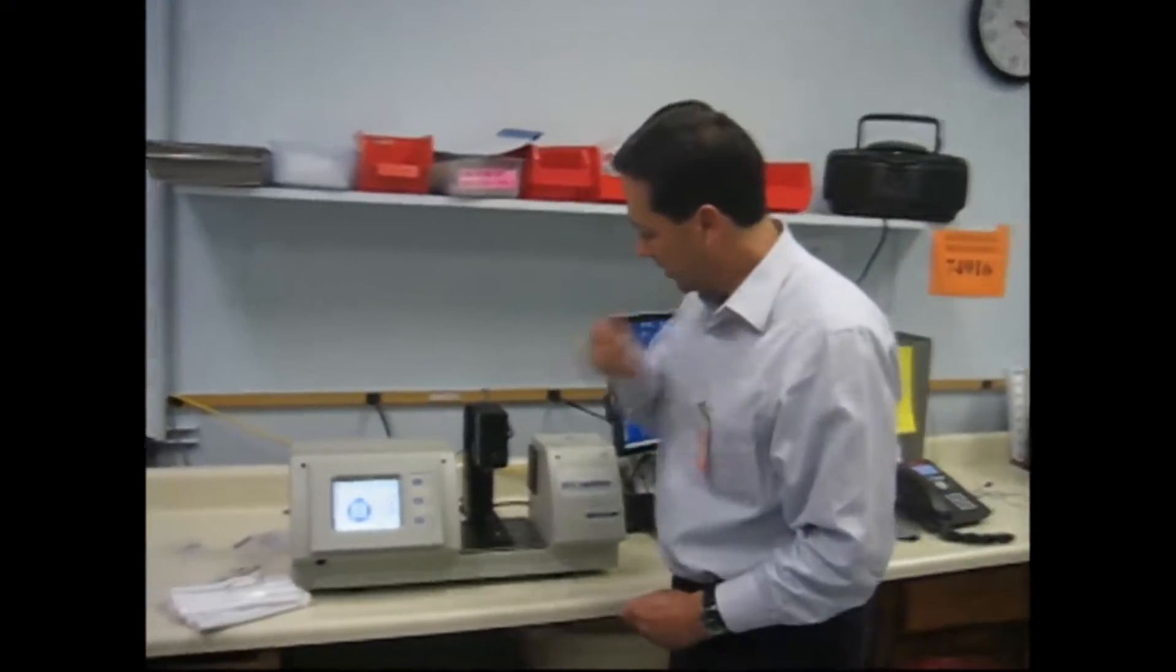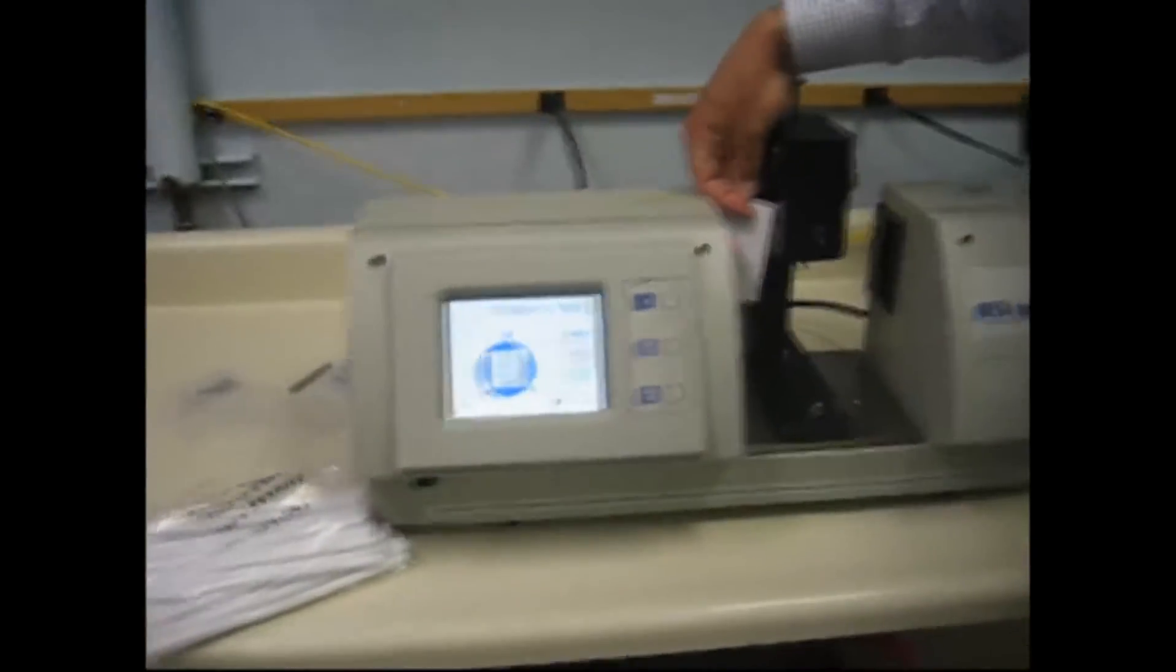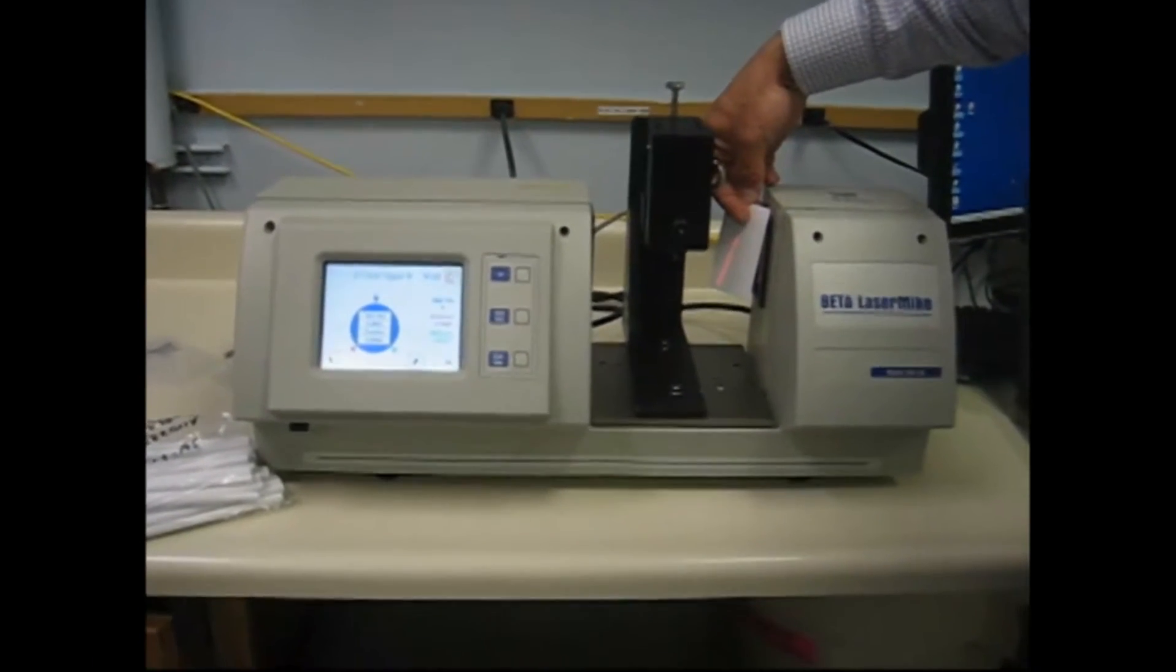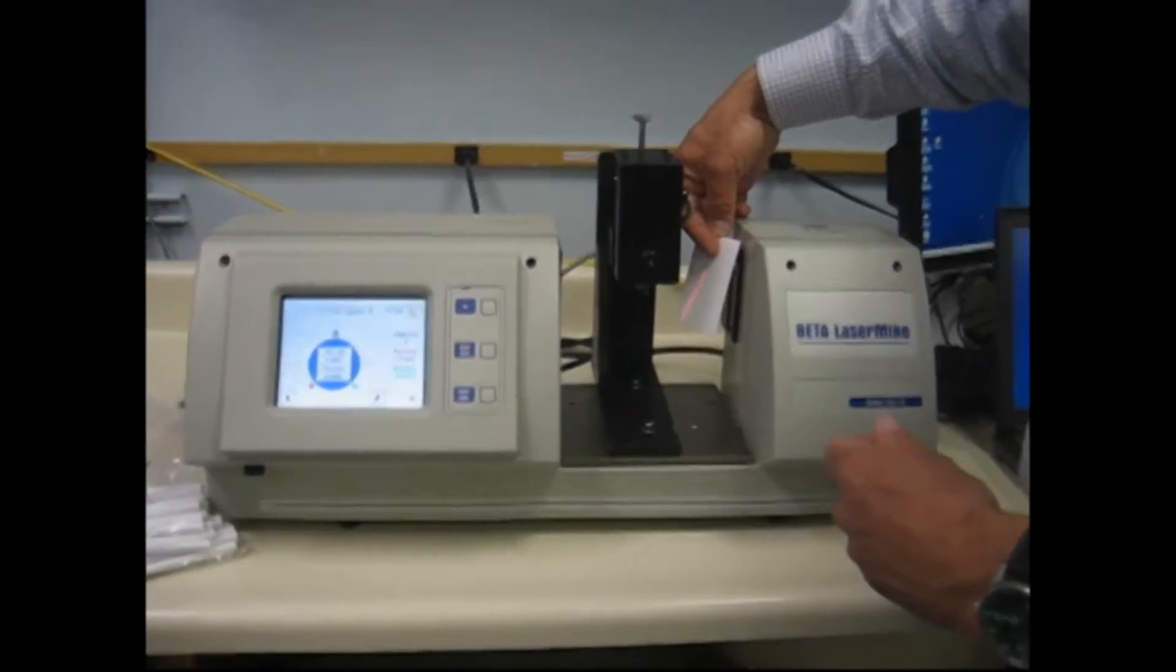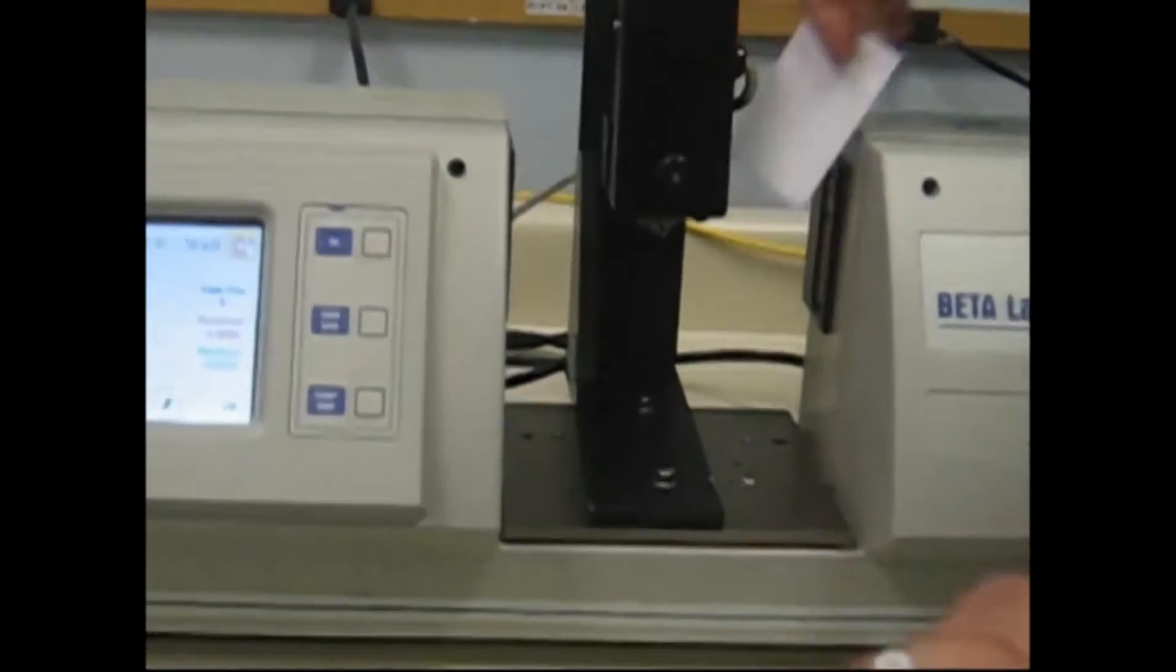The way it operates is it has a laser scanner across the air gap here. This is a two-inch laser beam. In that beam there's a mandrel, and what we do is we zero the mandrel out before we take a reading, whenever we switch the unit on, or whenever we change the mandrel due to product size.